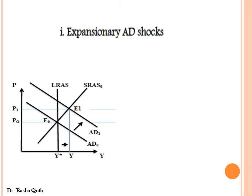Now suppose there is an increase in aggregate demand due to an increase in investment or government expenditures — equivalently, the government adopts an expansionary fiscal policy. The aggregate demand curve shifts rightward from AD-zero to AD-one. The new equilibrium is E1. In the short run, moving from E-zero to E1, the actual level of output is greater than the potential level of output, creating an inflationary gap.